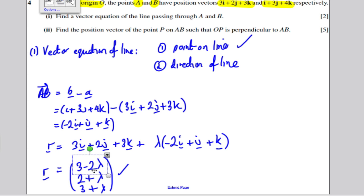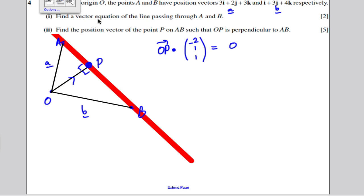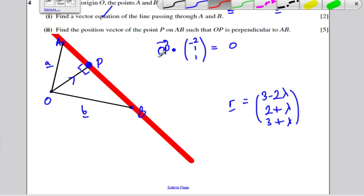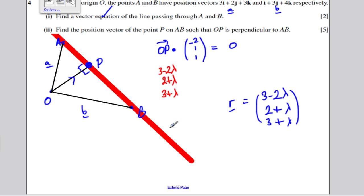I'm just going to paste that over here. I know that P has these positions for some lambda. So what I'm going to do is, instead of putting in just a general A, B, and C for some point P, I'm going to put in 3 minus 2 lambda for the I component, 2 plus lambda for the J component, and 3 plus lambda for the K component.